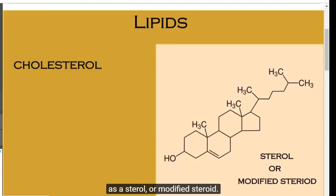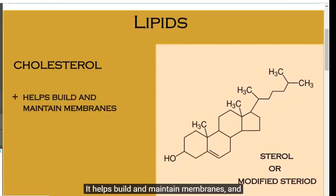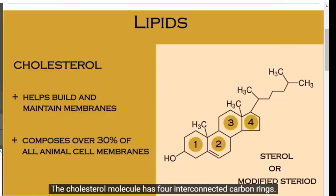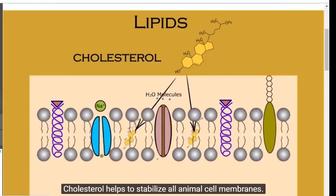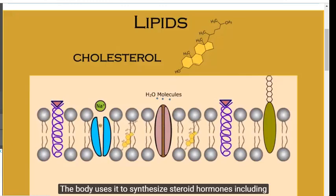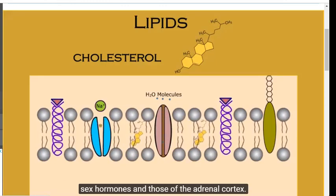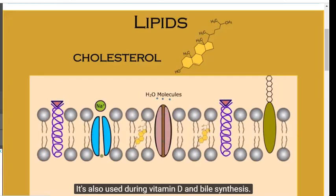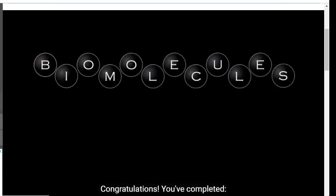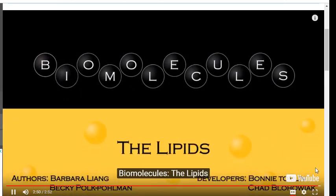Cholesterol is an organic molecule known as a sterol, or modified steroid. It helps build and maintain membranes and composes over 30% of all animal cell membranes. The cholesterol molecule has four interconnected carbon rings. Cholesterol helps to stabilize all animal cell membranes. The body uses it to synthesize steroid hormones, including sex hormones, and those of the adrenal cortex. It's also used during vitamin D and biosynthesis. Congratulations, you've completed biomolecules, the lipids.